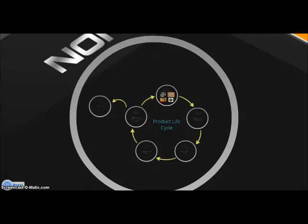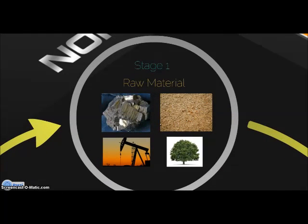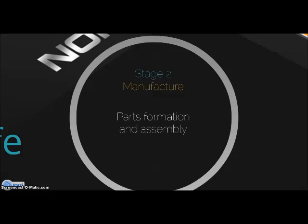There are six stages in a product life cycle. Stage 1 is raw materials. Examples of processes in stage 1 are mining metal ore and smelting into metal alloys, pumping oil and cracking into fuel to make plastics, refining sand into glass and semiconductors, and cutting trees and processing them into wood or paper. Stage 2 is manufacture: parts formation and assembly. Processes involved include transforming materials into parts via molding or tooling, combining parts into sub-assemblies, combining sub-assemblies into products, and packing products for distribution.